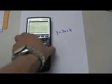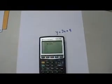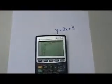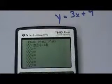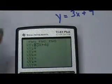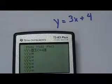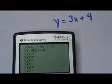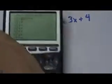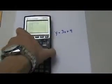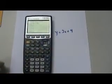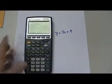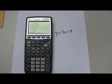I want you to see that what I typed and what I've got written in blue look the same: Y equals 3X plus 4. So if those match, then before I do anything else, I want to go to my window.